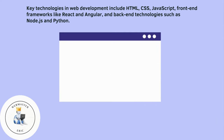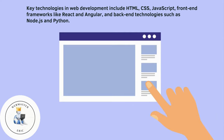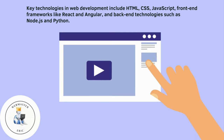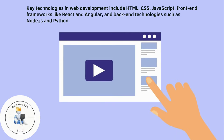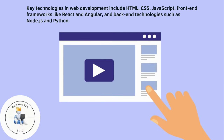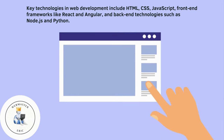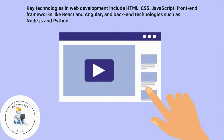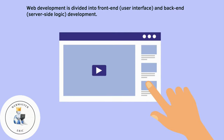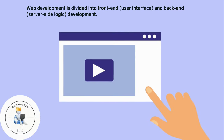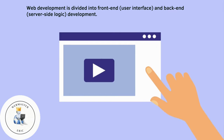Key technologies in web development include HTML, CSS, JavaScript, front-end frameworks like React and Angular, and back-end technologies such as Node.js and Python. Web development is divided into front-end — user interface — and back-end server-side logic development.